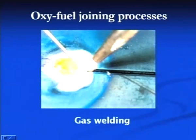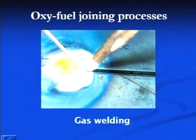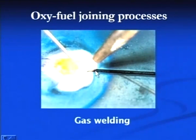This process is normally used for thin welding sheets, not for thick welding sheets. Flux is normally used in these processes to protect the molten metal from atmospheric contamination and to remove impurities.